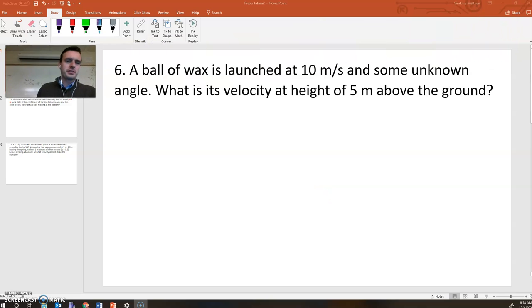Good morning, ladies and gentlemen. A quick Simpkins Business Corner Express for you here this morning before our day kicks up. A ball of wax is launched at 10 meters per second at some unknown angle. What's the velocity at height 5 meters above the ground?